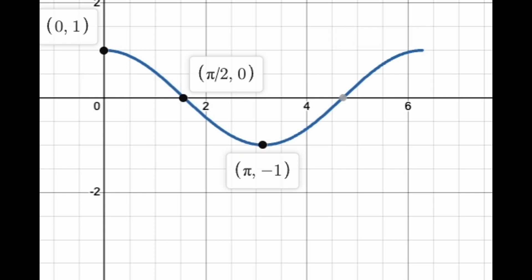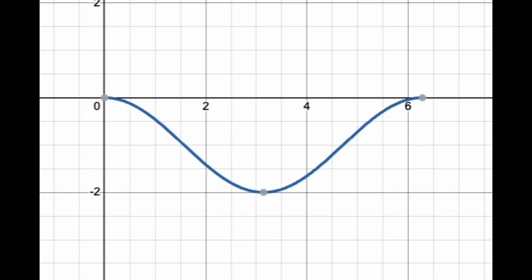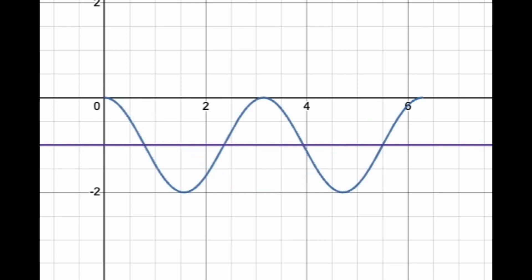But here we have cosine ω x minus 1. First of all, minus 1 means it's shifted down by 1 unit. When ω is greater than 1, for example when ω equals to 2, you have increased the frequency by 2.